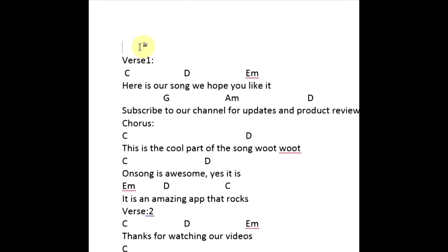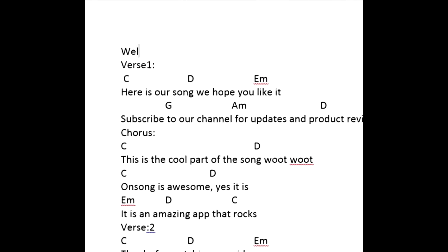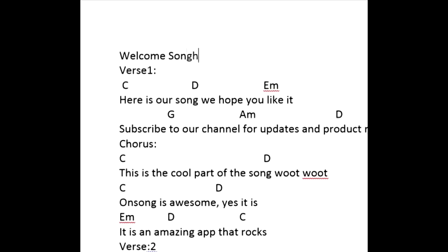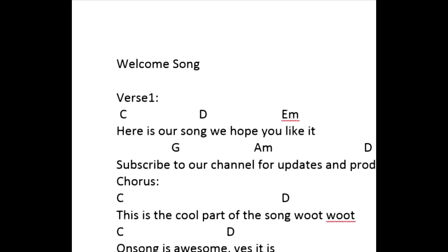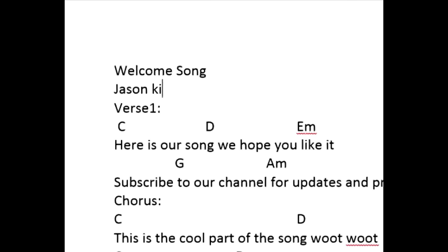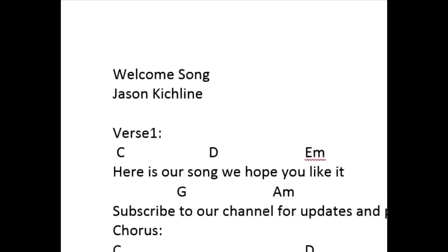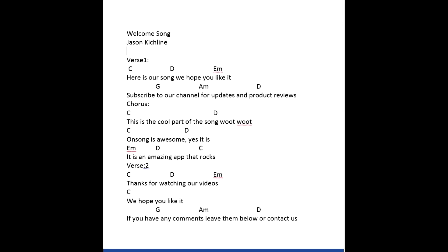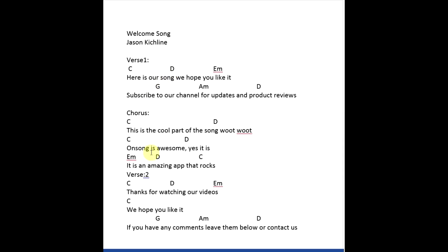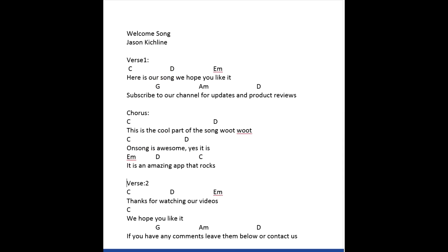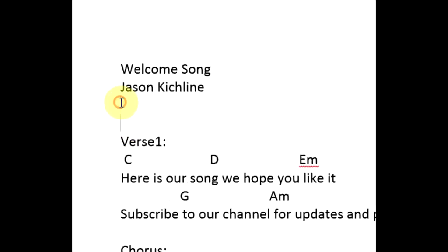Always make sure your title is on the first line, and if you want to put the author of the song, put that on the second line. Now let's create some sections by placing a space in between each section. Let's say this song is in the key of D — this is how we would write it: Key, colon, and then D.